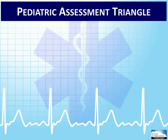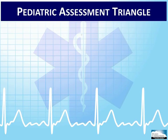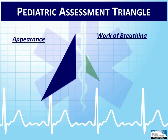The pediatric assessment triangle provides an effective 15 to 30 second tool for the rapid assessment of the severity of the pediatric patient's illness or injury and the need for lifesaving interventions. It is usually done as the EMT enters the scene and approaches the patient — often called an across-the-room assessment. There is no touching necessary, only looking and listening. It is done even before the hands-on ABCs of the primary assessment. The three components of the PAT are appearance, work of breathing, and circulation to the skin. When assessing appearance, it may be helpful to remember the mnemonic TICKLES for tone, interactiveness, consolability, look-gaze, and speech-cry.